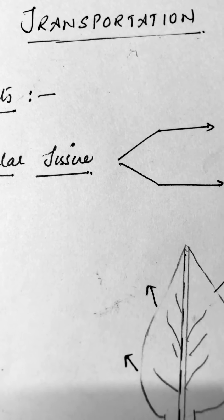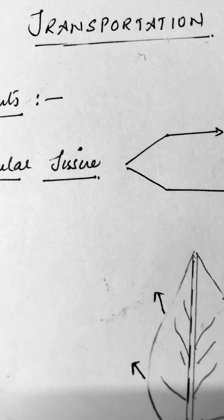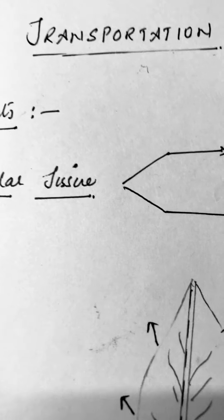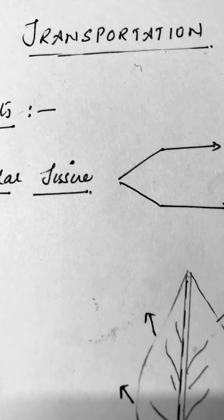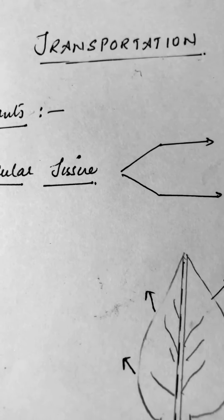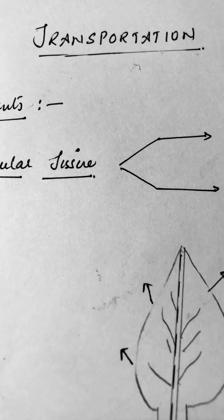The second thing that the plants need to transport is food. Food, as we have already learned, is prepared in the leaves and from the leaves it needs to be transported to each and every cell because living cells require food for their survival.